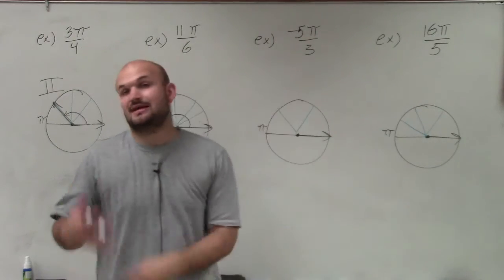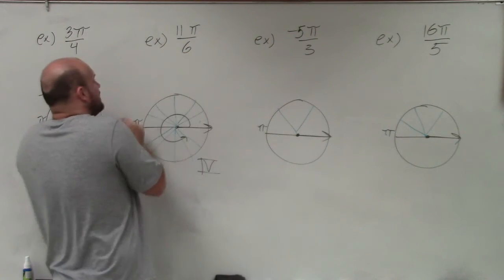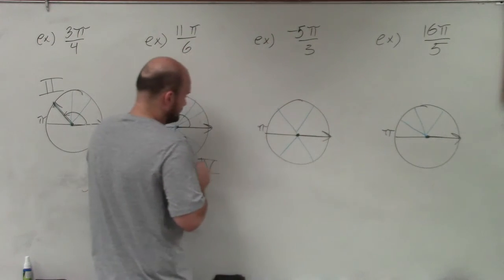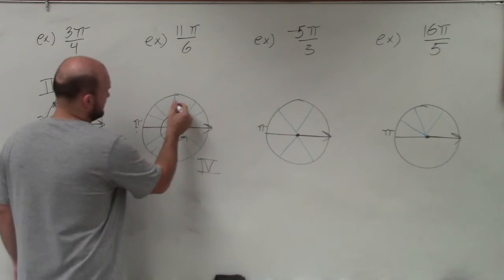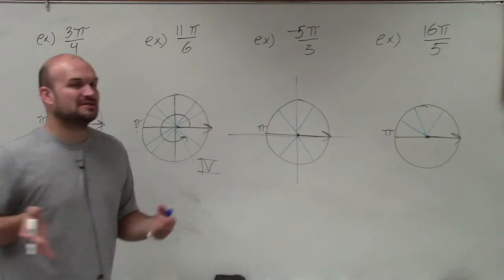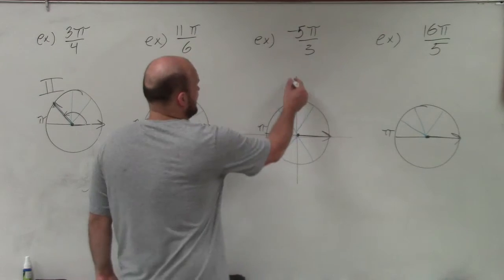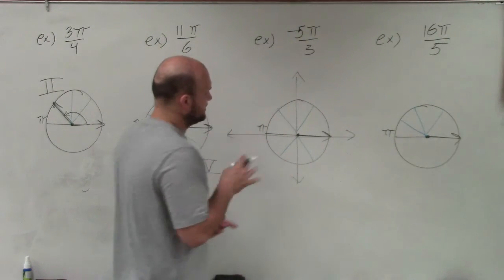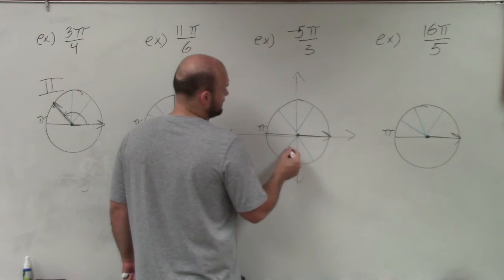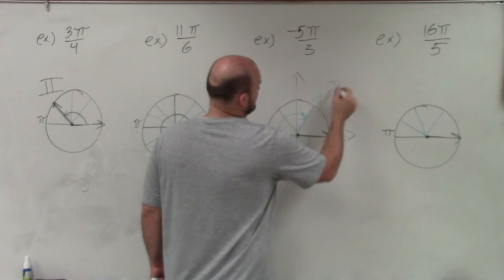Over here I have negative 5π/3. Remember, negative means we go in the negative direction — clockwise instead of counterclockwise. I still start on the initial side but travel clockwise. Breaking into thirds and counting: negative 1π/3, 2π/3, 3π/3, 4π/3, 5π/3. You can see that my angle ends in the first quadrant.